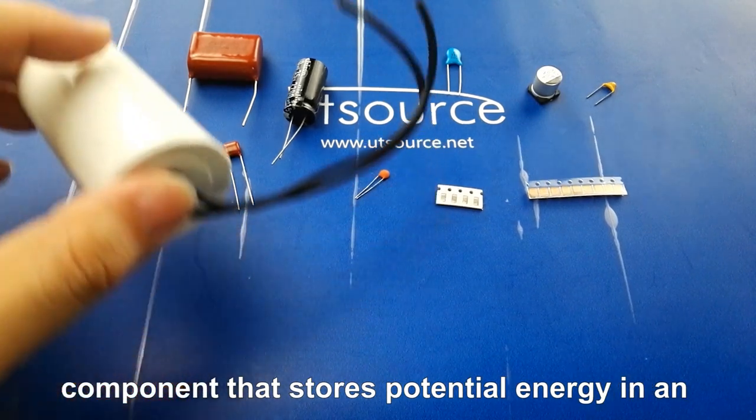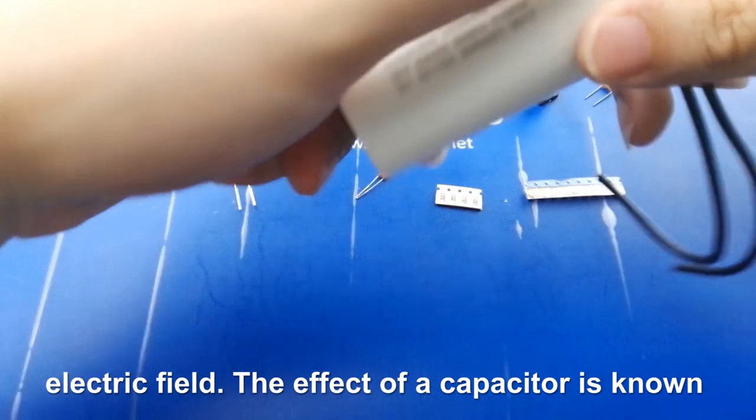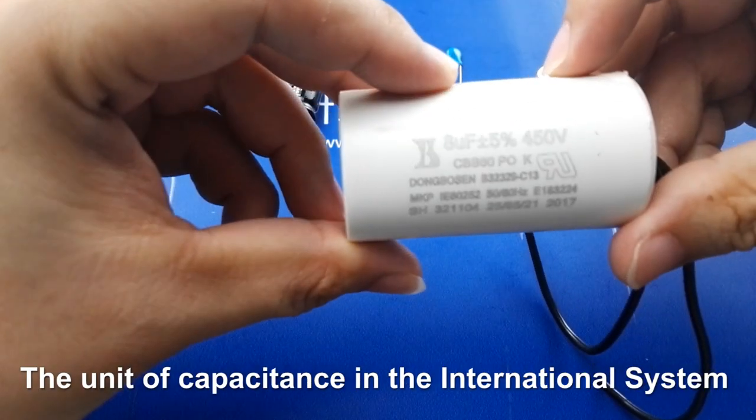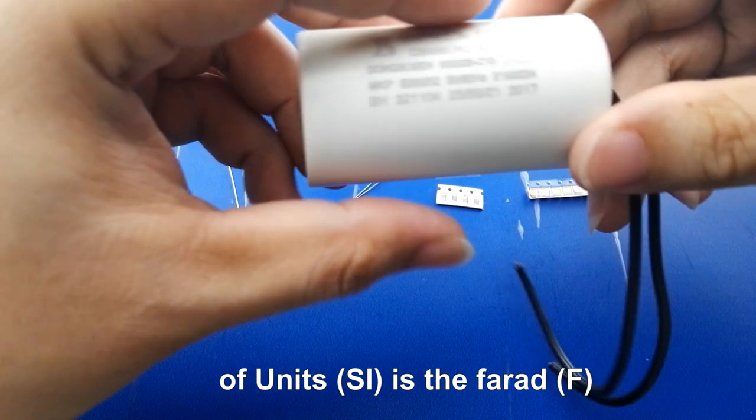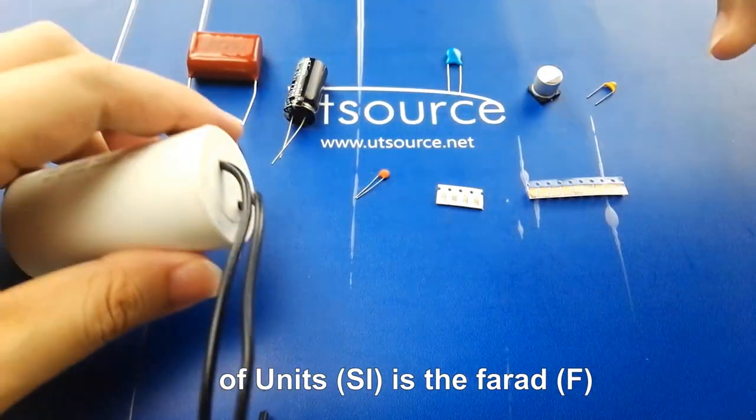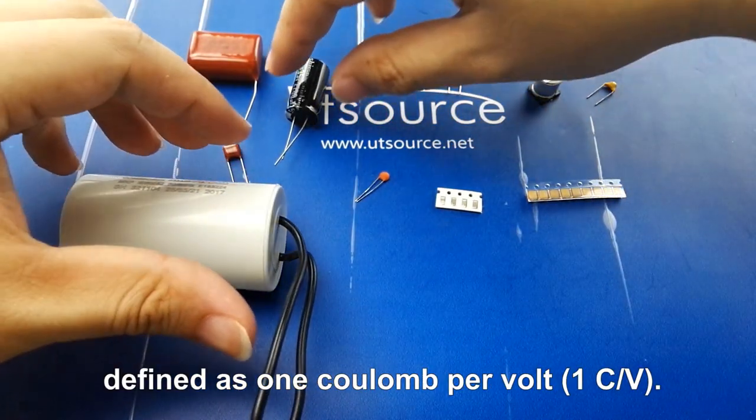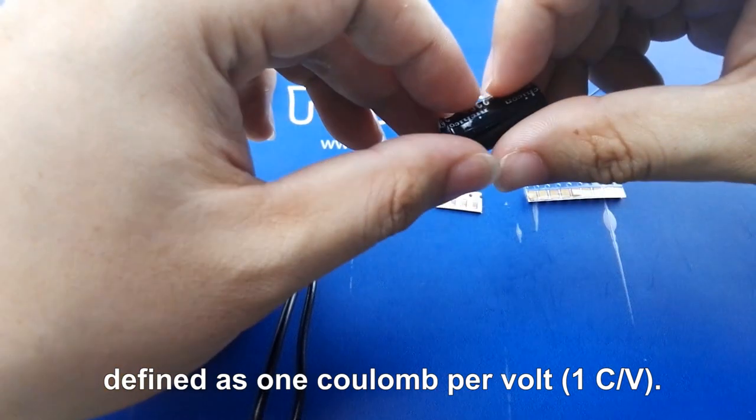The effect of a capacitor is known as capacitance. The unit of capacitance in the International System of Units (SI) is the farad (F), defined as one coulomb per volt (1 C/V).